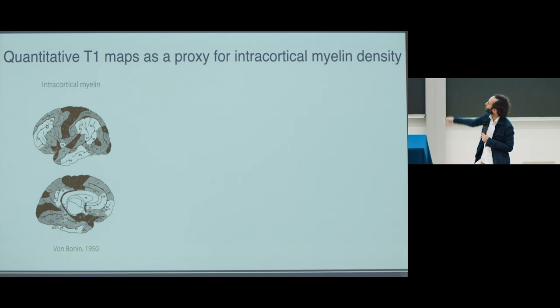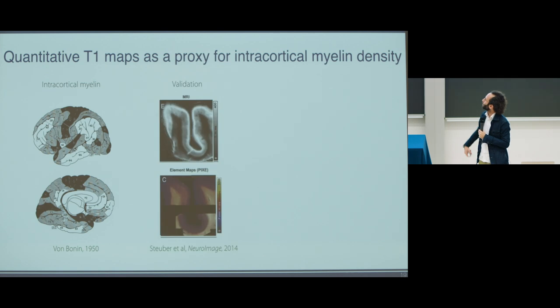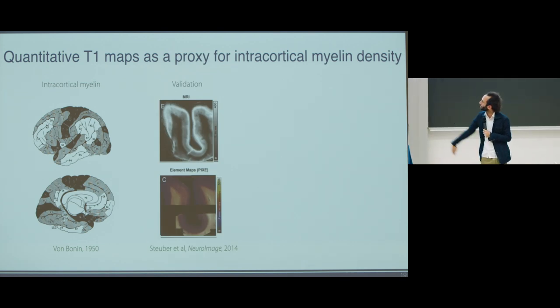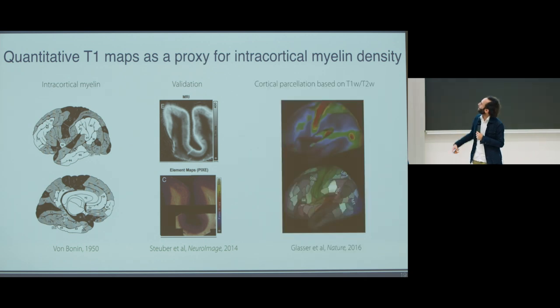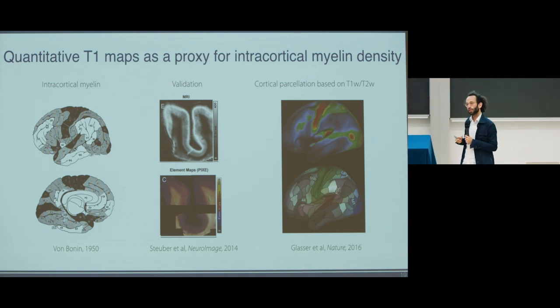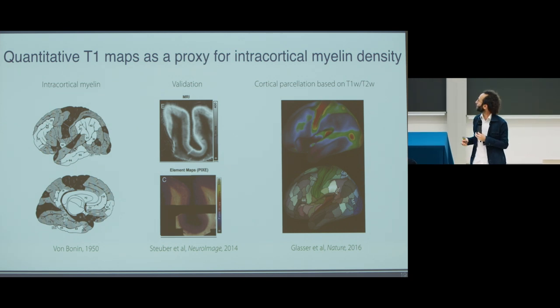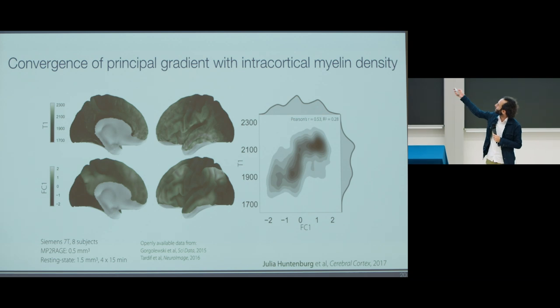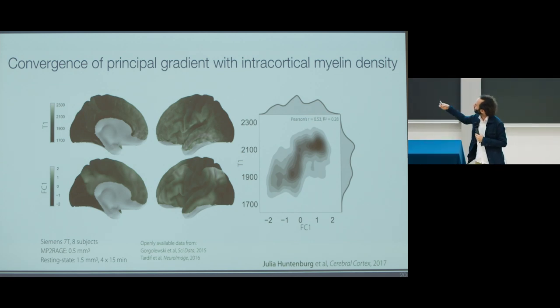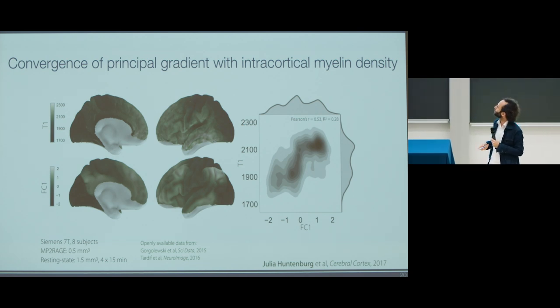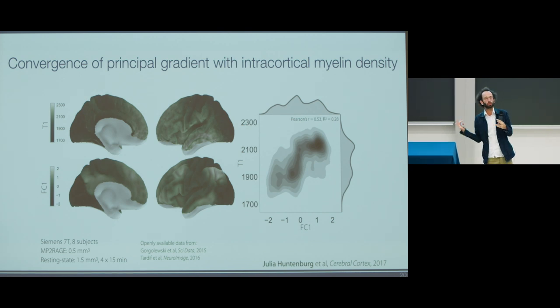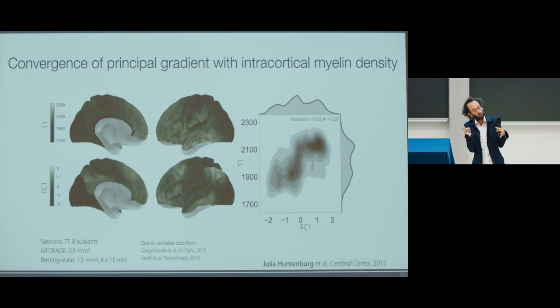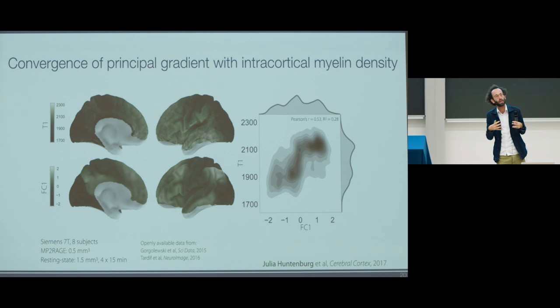This is showing a whole brain distribution of intracortical myelin as an illustration. There are ways of characterizing this using T1 maps, which has been validated at the Max Planck in Leipzig. Another measure, using T1-T2 ratio, has also been used by the Human Connectome Project as a way of providing additional information about cortical structure. Julia acquired high-resolution data at 7 Tesla across eight subjects and was able to demonstrate a similarity in the distribution of values from T1 maps reflecting intracortical myelin with the principal gradient. The maps don't correspond perfectly, but they illustrate a general pattern of consistency between what we're observing purely in microstructure and large-scale connectivity.